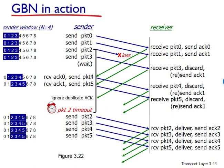Figure 3.22 shows the operation of the Go Back N protocol for the case of a window size of four packets. Because of this window size limitation, the sender sends packets 0 through 3, but then must wait for one or more of these packets to be acknowledged before proceeding. As each successive acknowledgment is received, the window slides forward and the sender can transmit one new packet.